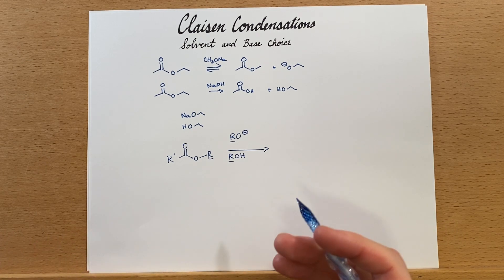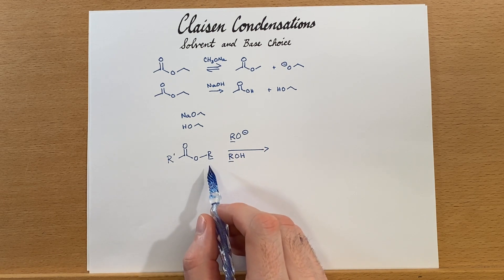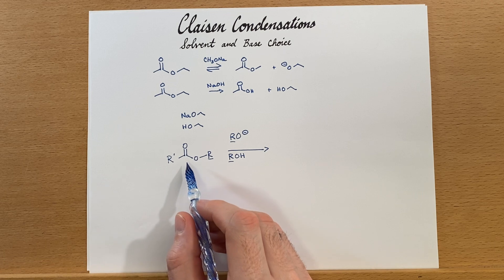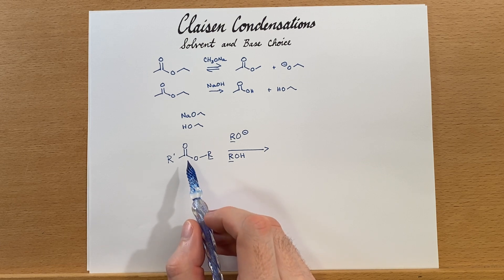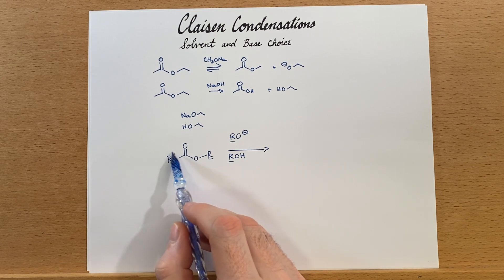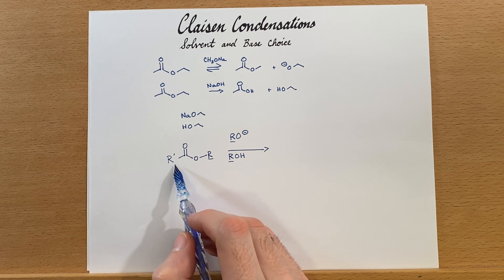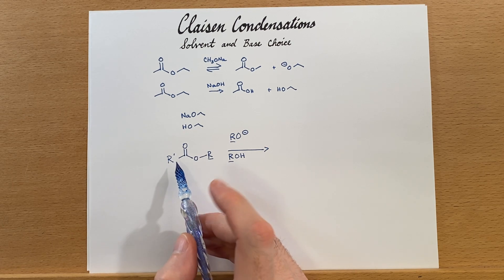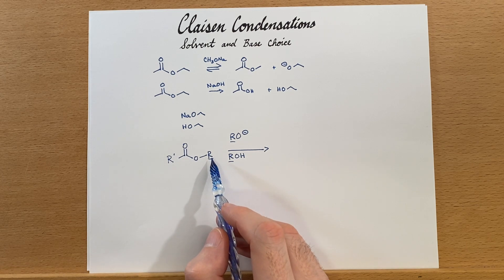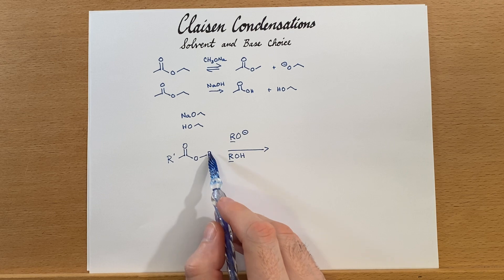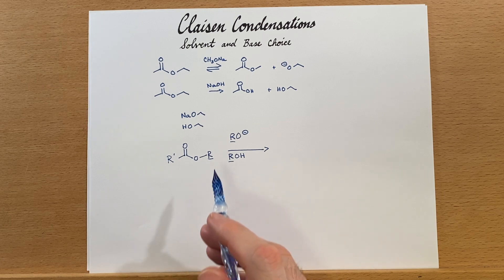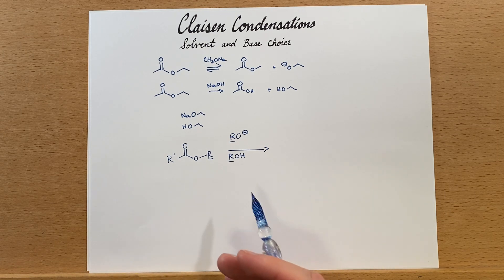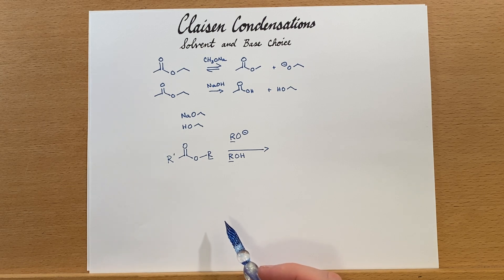It may seem like the alkyl group is less important than the alkenoate group, and to a certain extent that is true, since two of the alkenoate groups are incorporated into the Claisen condensation product. However, there is still one alkyl group on the product, and we would like to avoid a combination of multiple products, especially since those products will have very similar properties and be difficult to separate.